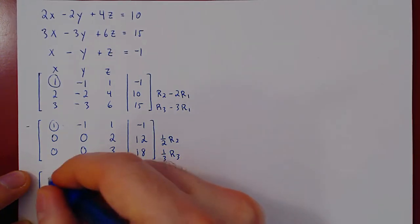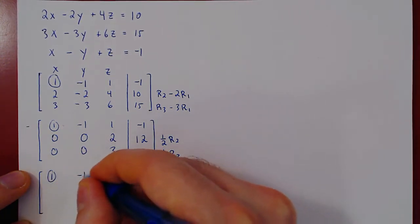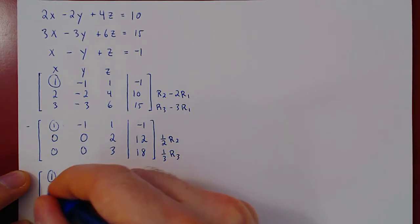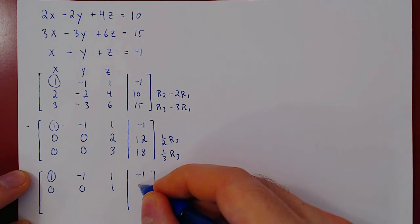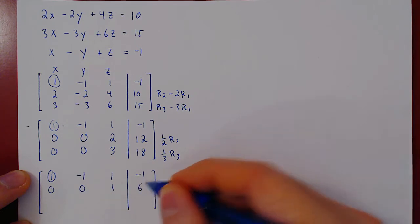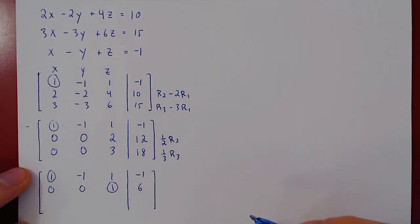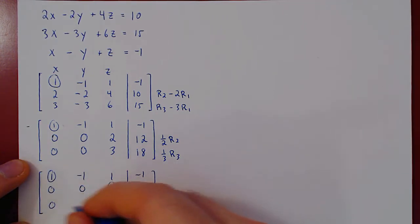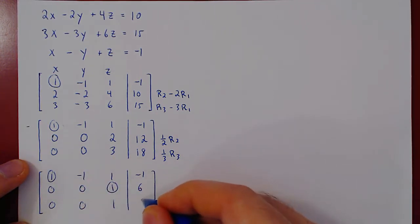We recopy the first row, then apply one half of row two, which gives us zero, zero, one, six — this is our second leading one. Multiplying row three by one third gives us zero, zero, one, six.